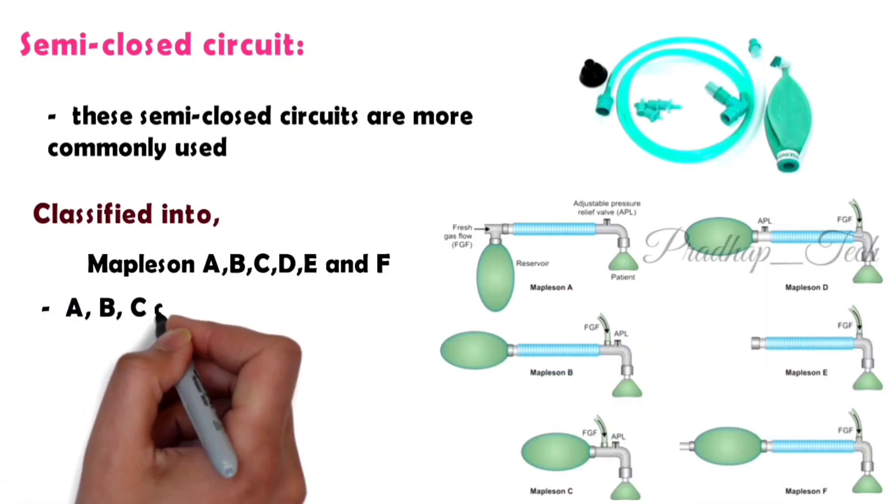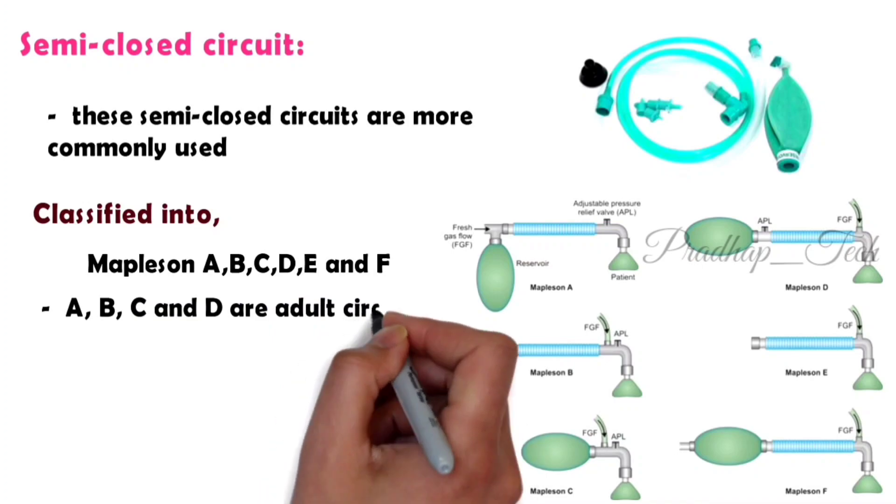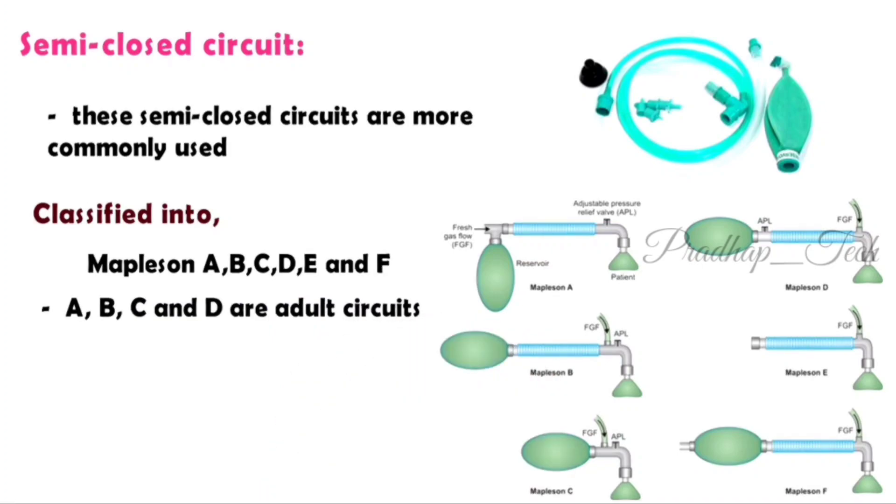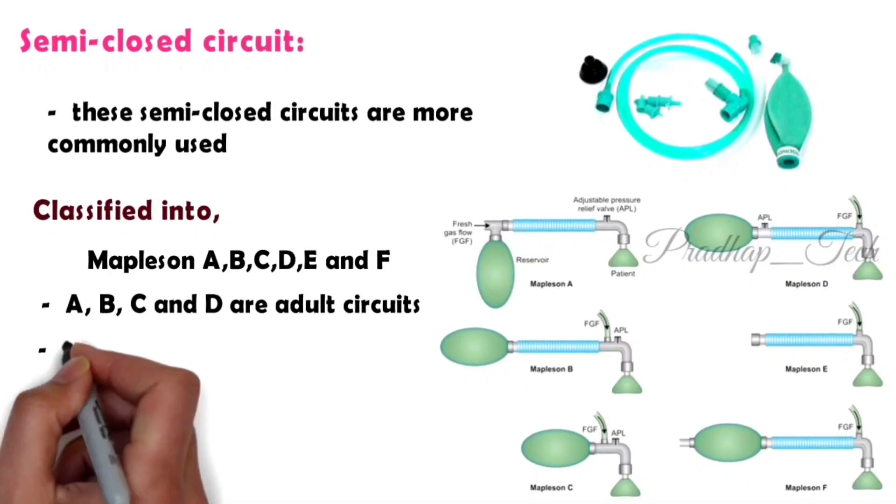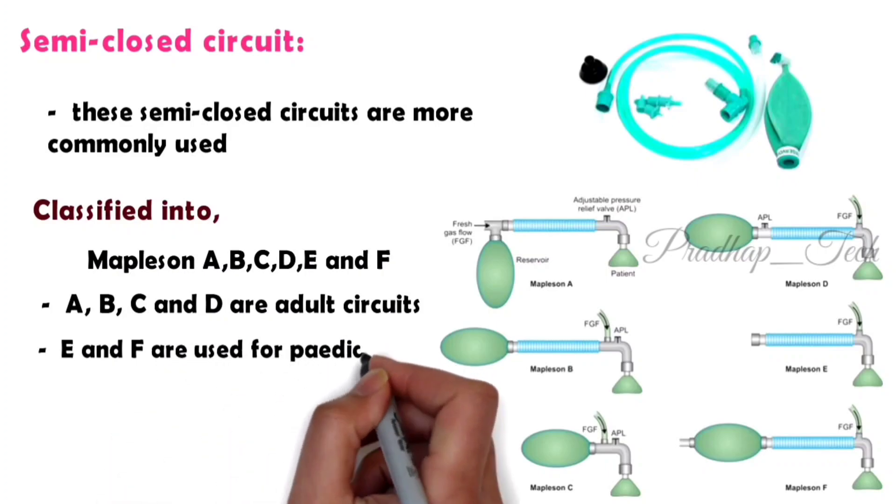Among them, A, B, C and D are adult circuits which cannot be used for pediatrics because these circuits deliver high pressure and need high resistance to eliminate carbon dioxide. So, only Mapleson E and F are used for pediatrics.